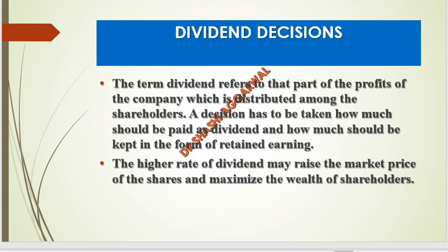The last decision is the dividend decision. If the company has a profit, the profit distributed to shareholders is known as a dividend. The company must decide how much dividend to pay and how much to retain. If the company retains earnings, they can use it for expansion and won't need to pay. If the dividend rate is high, the share price will rise and shareholders' wealth will be maximized. The dividend decision is based on the dividend policy — we have to see whether dividends are being paid consistently.